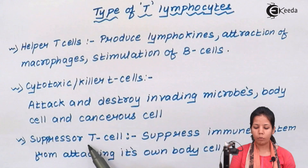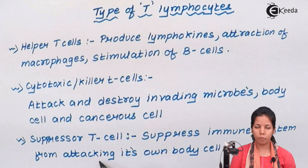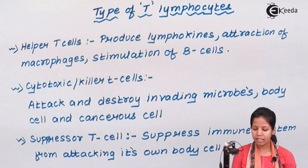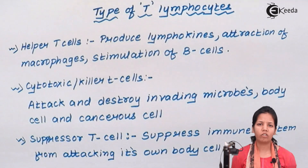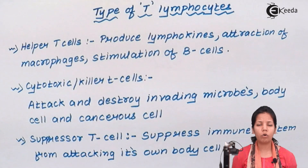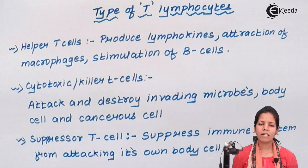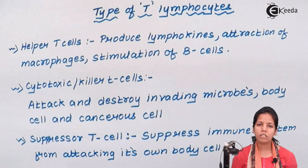Another kind are suppressor T-cells. These are the cells of the immune system that stop the immune system or immune cells from attacking its own body cells, especially during grafting. During grafting — for example, a kidney transplant — once a kidney is transplanted from one individual to another, one is the recipient and another is the donor. There are chances that the donor's immune system may reject the new organ.